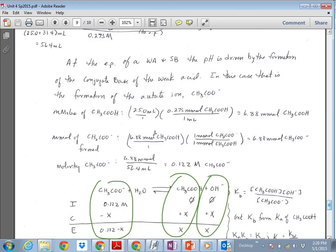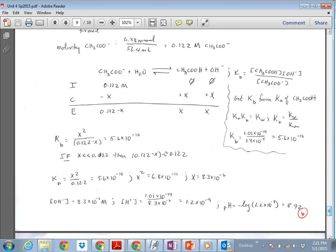If we apply the simplifying assumption that we've used a lot, if X is significantly smaller than that 0.122, then your Ka expression becomes pretty doable. Okay, like that. Actually, it's a Kb expression, isn't it? Okay, so solving for X, X is equal to 8.3 times 10 to the minus 6. Again, that's your hydroxide ion concentration. So to get to pH, we can do it a number of ways, but what I did was take the hydrogen ion concentration is Kw divided by hydroxide ion concentration to get the hydrogen ion concentration, and then knock out the pH by taking negative log of that.